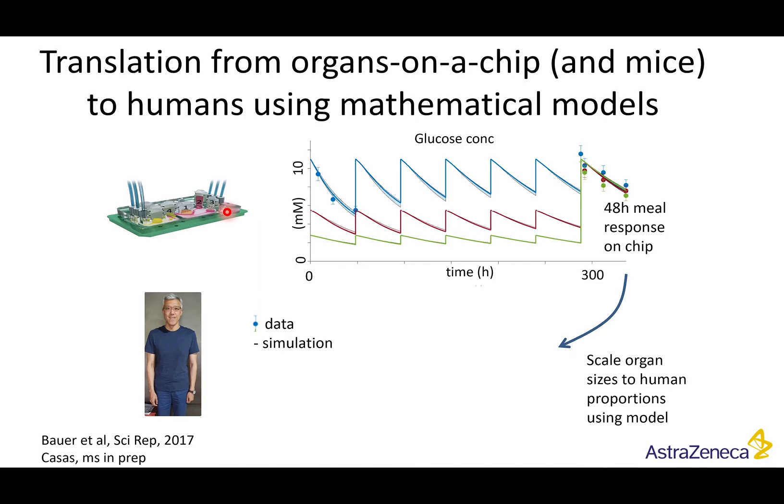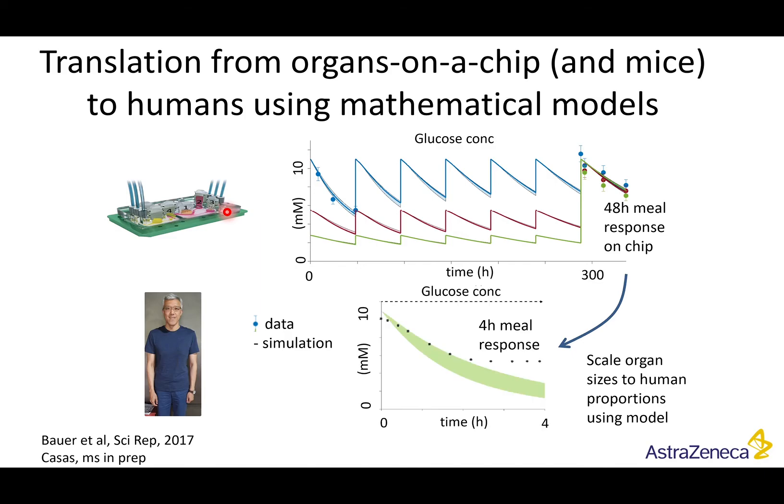We then translate this by scaling in the computer to human proportions — converting from the very long meal responses seen on the chip to the normal four-hour meal responses seen in humans.